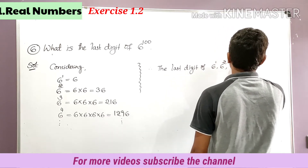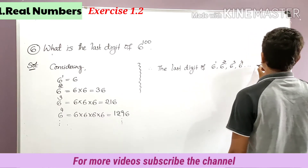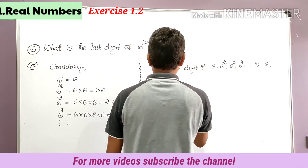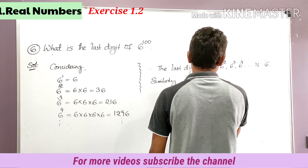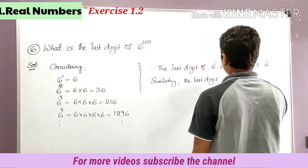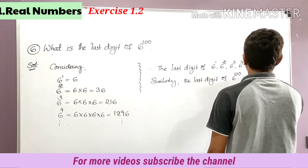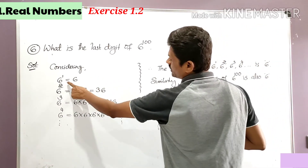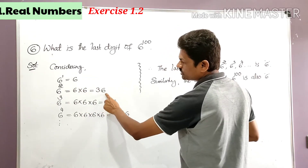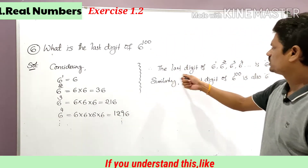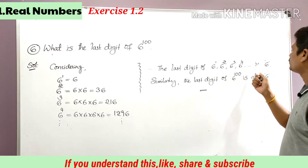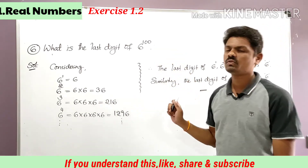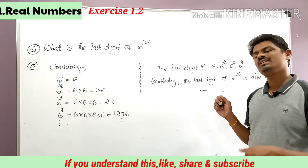Similarly, the last digit of 6 to the power 100 is also 6. The last digit of 6 to the power 1, 2, 3, 4, and so on is 6. Similarly, the last digit of 6 to the power 100 is also 6. Not only 6 to the power 100 — for any natural number, the last digit of 6 to the power n is 6 only.